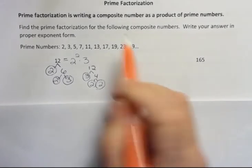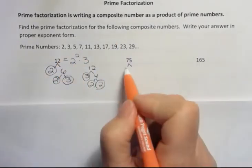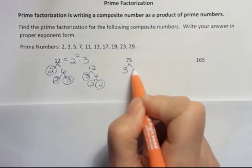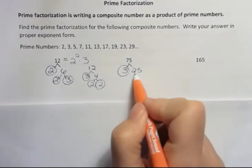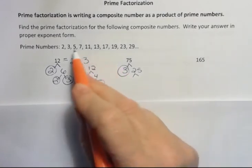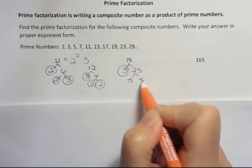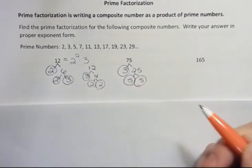75. 2 does not go into 75. 3 does. So I could start with 3 and 3 times 25. And 3 is a prime, but 25 is not. And then 5 goes into 25. So 5 times 5, which is a prime, and I'm finished.